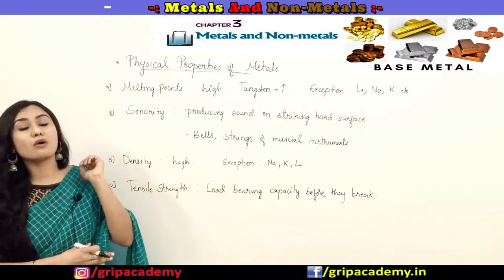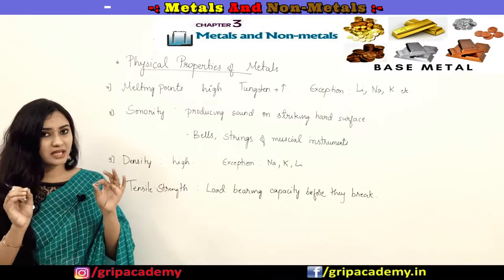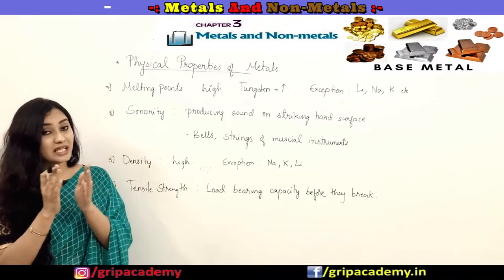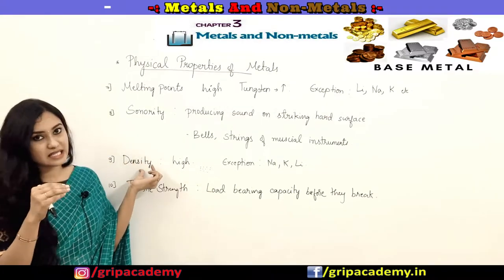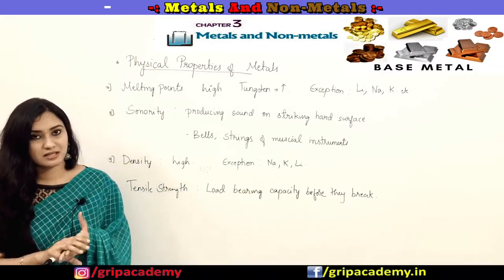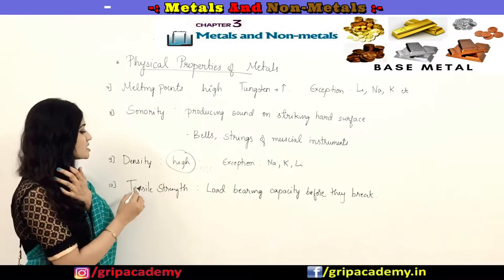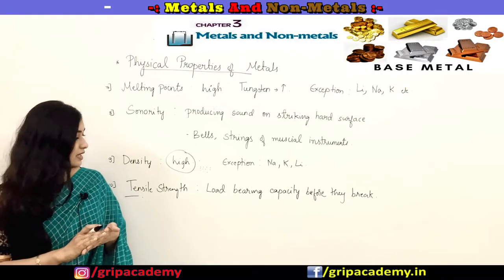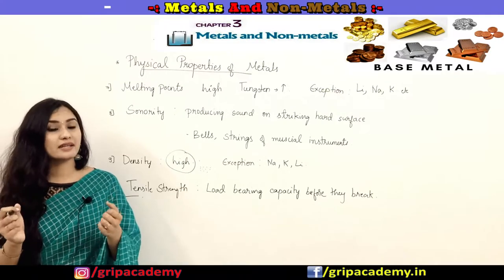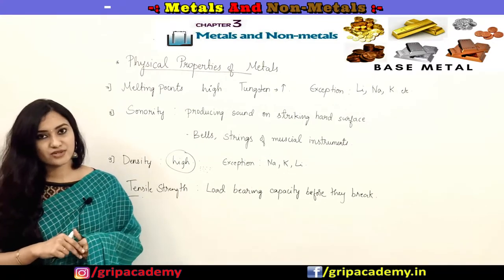Regarding density, in general all metals have high density because the atoms in metals are closely packed. Exceptions include sodium, potassium, and lithium which have low density. Tensile strength of all metals is generally high — it is the load-bearing capacity before breaking. In general all metals have high tensile strength. This concludes the physical properties of metals.